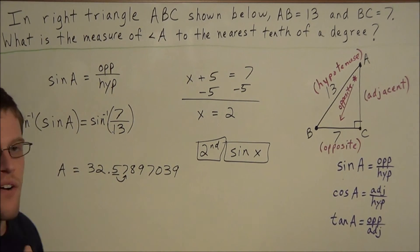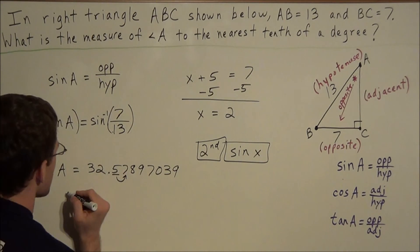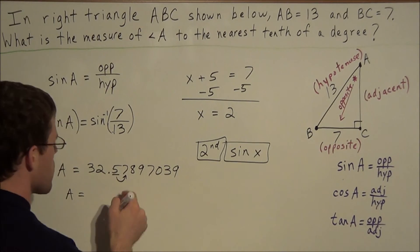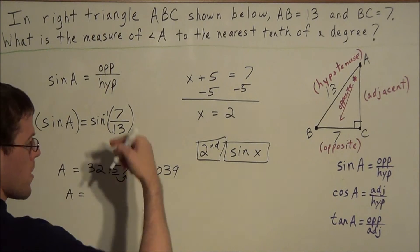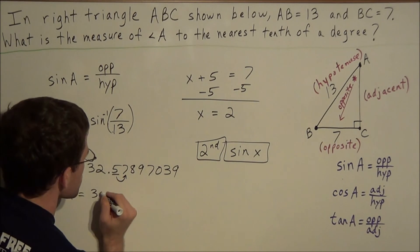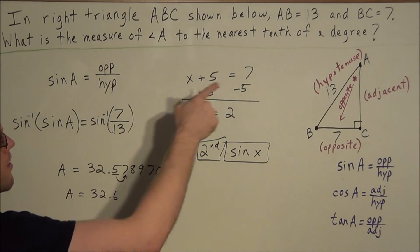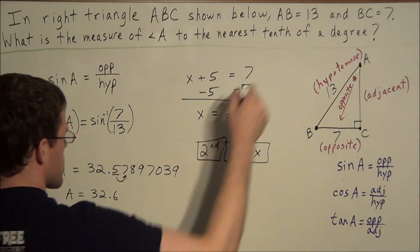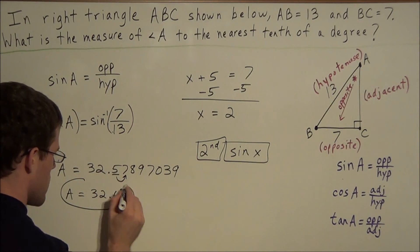And we look one digit to the right. And if that digit is 5 or higher, we're going to round up. If it's 4 or lower, we're going to keep it the same. But in this case, notice that it's a 7, which is greater than 5, so we're going to round this 5 up to a 6. So we have 32.6, and remember, our unit for measuring this angle is degrees. So we have 32.6 degrees.